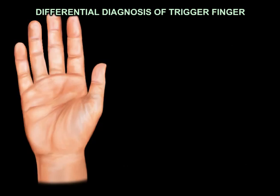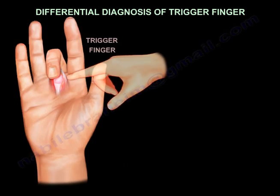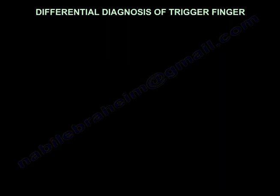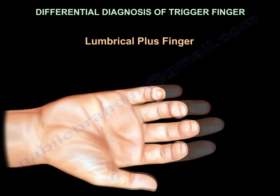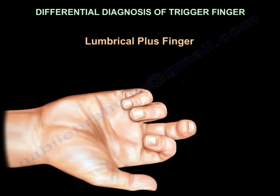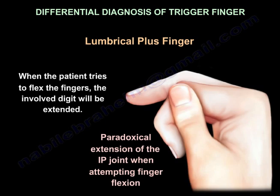Differential diagnosis of trigger finger. Lumbar plus finger: when the patient tries to flex the fingers, the involved digit will be extended — paradoxical extension.